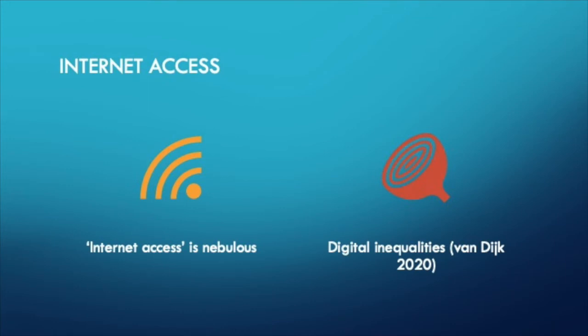Firstly, internet access is a nebulous term, and this will be illustrated with examples as we proceed through this presentation. Research on digital inequalities — represented here by a sliced onion — reveals patterns of ownership, access and use that researchers need to be aware of when considering doing research online. For further information on digital inequalities, see the recent work by Van Dyck.